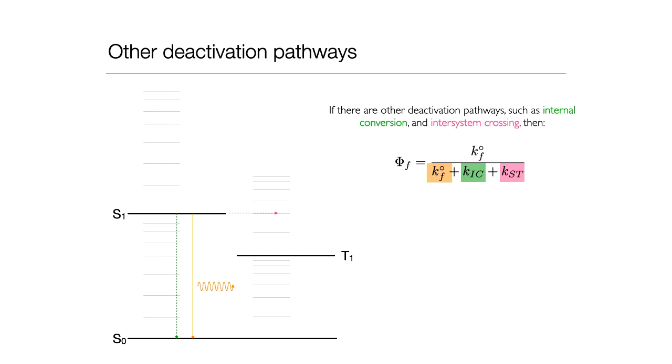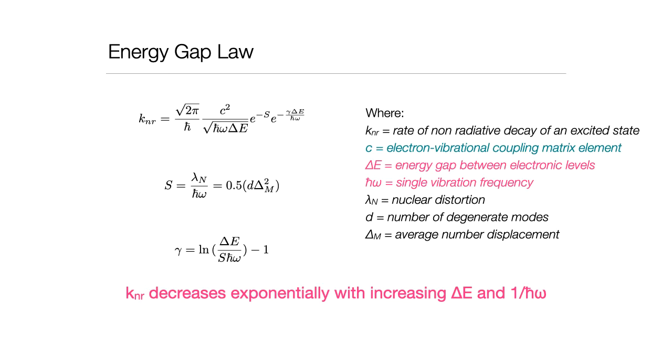But what helps govern how big these rates are? Well, that's given to us by the energy gap law. The energy gap law is a rather complicated equation, which I will never expect you to actually be able to use in anger, but I want you to be able to understand some of the important terms here. And I've highlighted a couple of the terms. One of them is the energy gap between the two electronic energy levels, ΔE, and the other one is the single vibration frequency, ℏω.